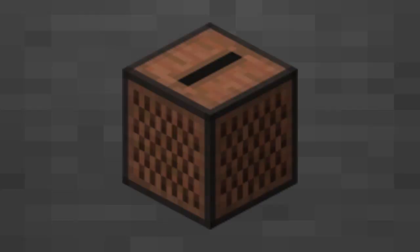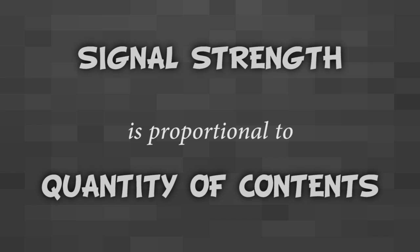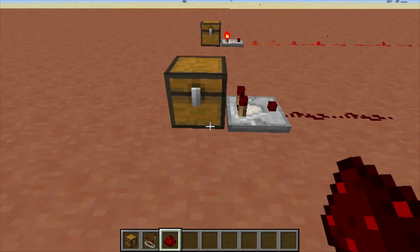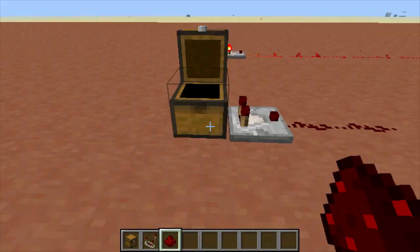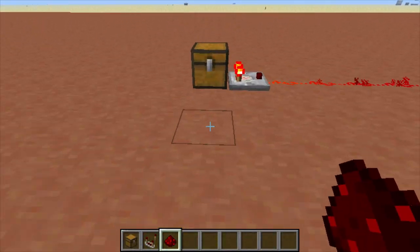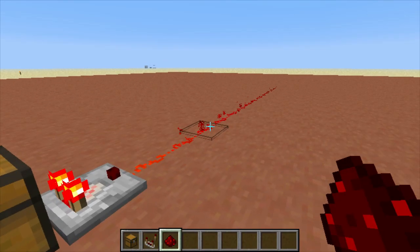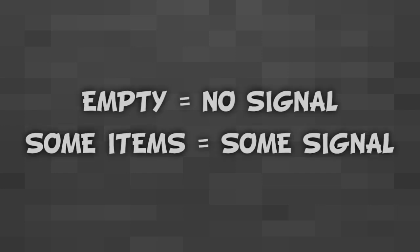They also work on jukeboxes, but I will get to that one in a bit. The signal strength is always proportional to the amount that the container is filled. In other words, if there are no items in the container there will be no signal, and if the container is full then it will output a full signal strength. This mechanic is useful if you want to test whether a chest is empty — if it has one or more items the output will be at least a signal strength of 1, and it will only be off if the chest is empty.